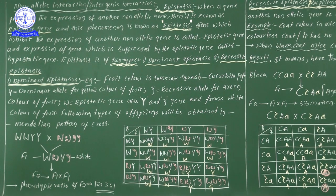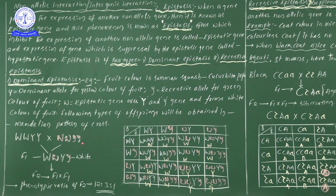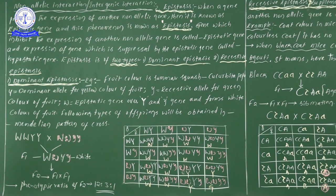And here, small w small w with small y small y — since there is no capital W to suppress capital Y or small y, if capital Y were present it would give yellow, and small y gives green. So this parent color is green.